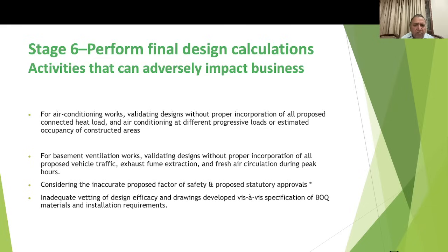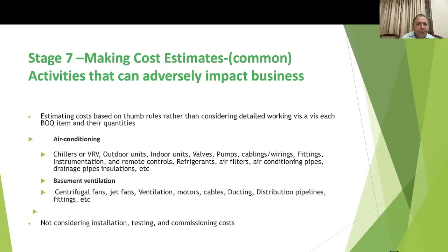Stage 7 is making cost estimates. Some designers go by thumb rule rather than detailed working. For air conditioning, designers need quick estimates for main BOQ items such as chillers, VRV outdoor and indoor units, wall pumps, cabling, wiring, fittings, instrumentation, remote controls, refrigerants, and air filters. For basement ventilation, cost estimates should cover centrifugal fans, jet fans, ventilation motors, cables, ducting, and distribution pipelines — based on required quantities. Not incorporating costs for installation, labor, testing, and commissioning is a key risk.